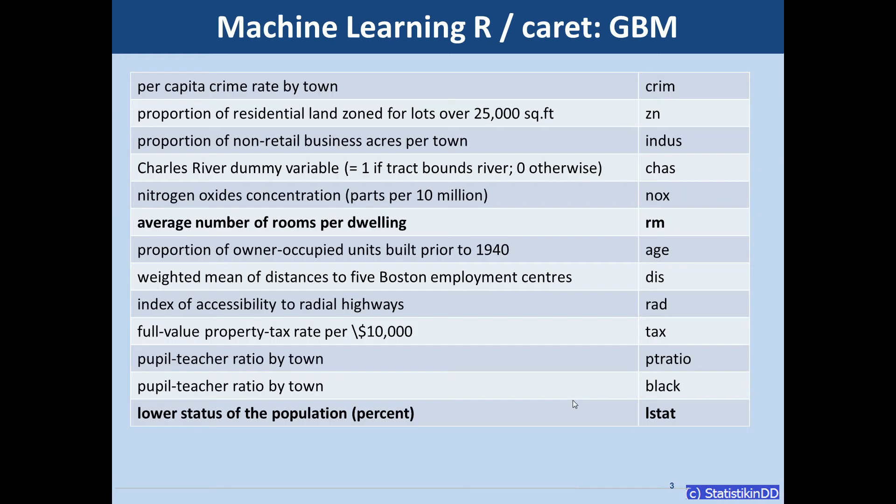We have 13 predictors in the dataset. We don't need to look at all of them in detail. I just mention two here in the middle: in bold, the average number of rooms per dwelling called RM, and at the bottom the lowest status of the population in percent called LSTAT. But the models will use all predictors.